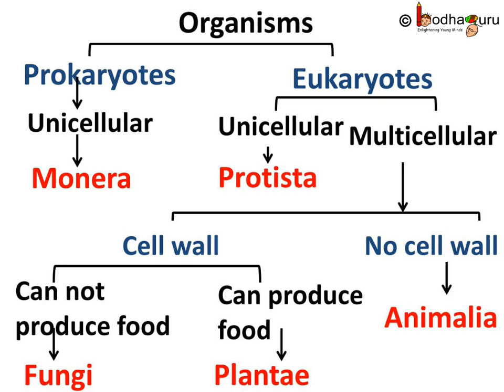Now, the organisms with cell walls were divided based on the nutrition type, whether autotrophic or heterotrophic. Multicellular organisms having cell walls and that can perform photosynthesis belong to kingdom Plantae. Whereas, multicellular organisms having cell walls but unable to perform photosynthesis belong to kingdom Fungi.